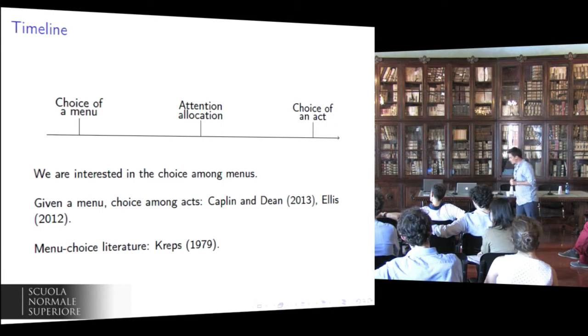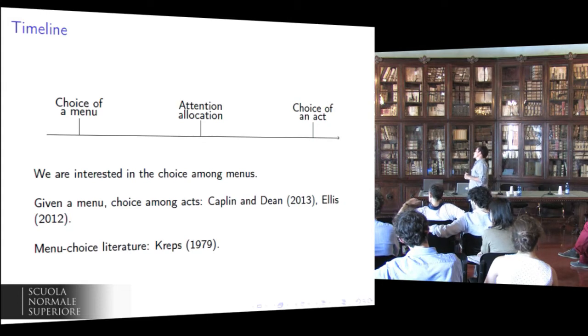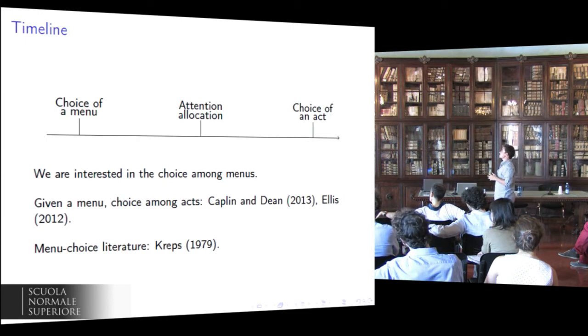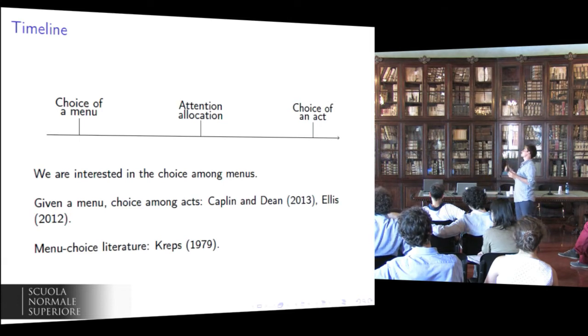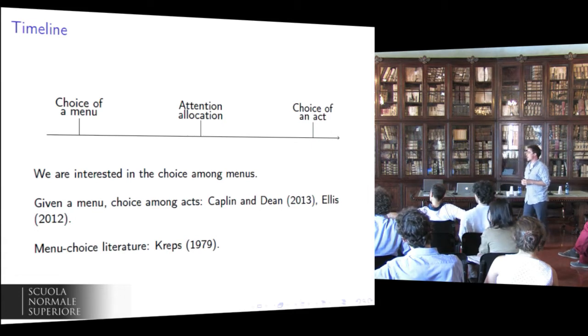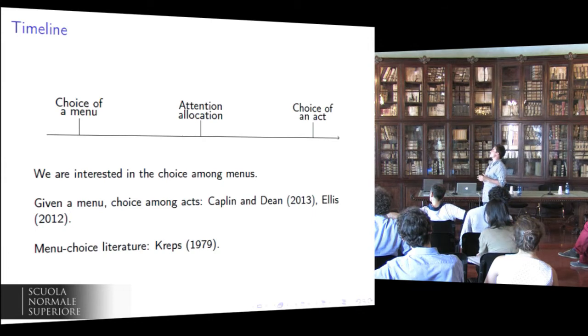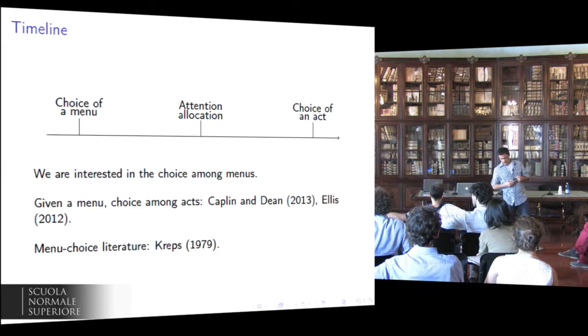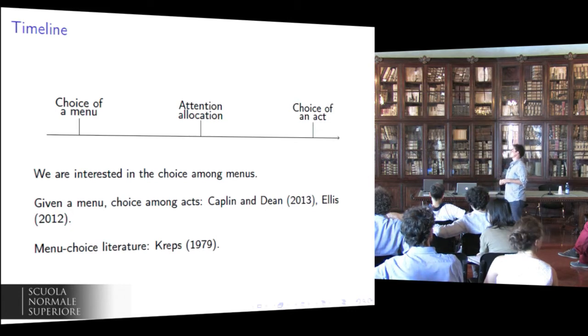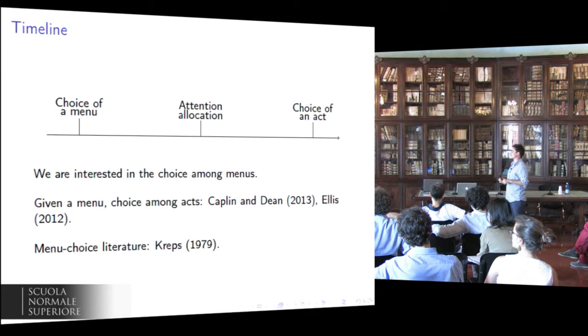Now, suppose the decision maker is rationally inattentive. How to model her behavior in this situation? In particular, here, we are interested in how the DM ranks menus. Other work, such as Kaplan and Dean 2013 and Dallas 2012, they focus on how she ranks acts given a menu. For reference, this choice problem belongs to the broad family of menu choice problems initiated by Krebs in 79.